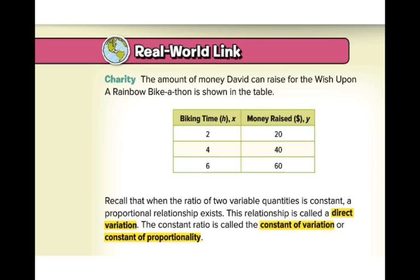Let's take a look at our real-world link. The amount of money David can raise for the Wish Upon a Rainbow Bike-A-Thon is shown on the table. So if he bikes for two hours, he can raise $20. If he bikes for four hours, he can raise $40. And if he bikes for six hours, he can raise $60. It says below, recall that when the ratio of two variable quantities is constant, a proportional relationship exists.